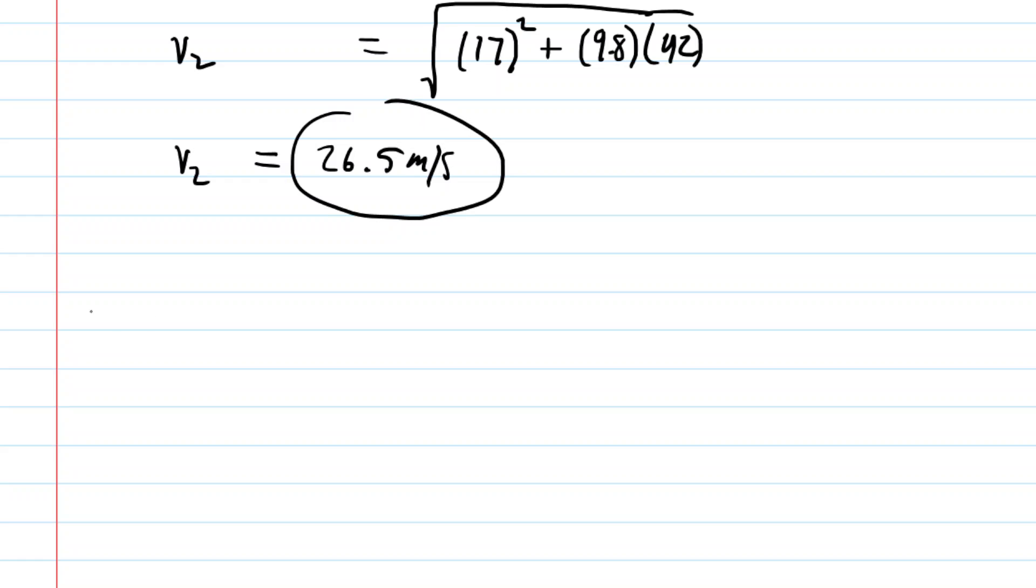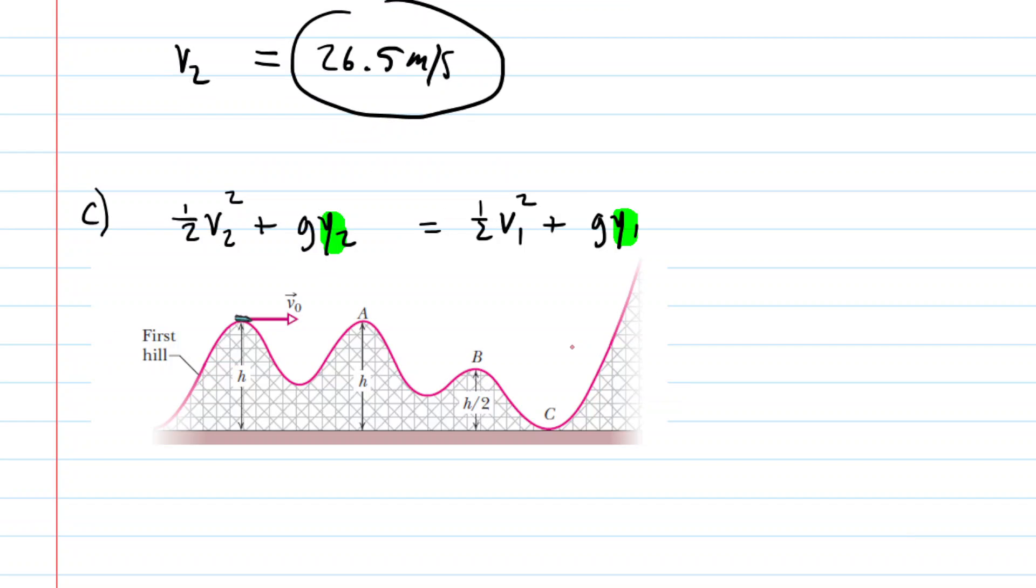So let's look at part C next. So in part C, we're calculating the speed of the car at point C, that's going to serve as our position number two, we still have position number one over here. Now notice that the height at point C is zero. So this means that the value for Y2 is going to equal zero, that's going to knock out this term entirely. So we can actually rewrite the equation in a much simplified manner.